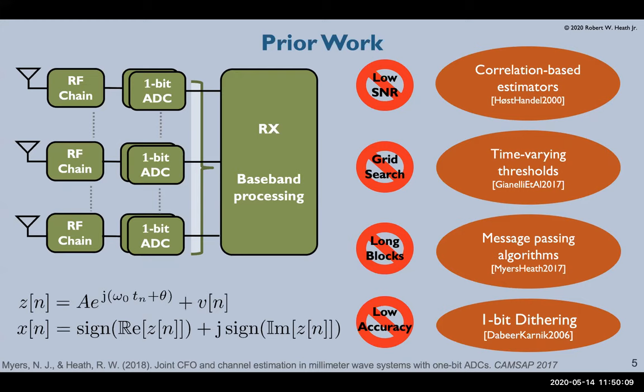But we need to consider our framework. Prior to channel estimation MIMO communications tend to be operating at very low signal noise ratio which makes correlation based estimators perform poorly.